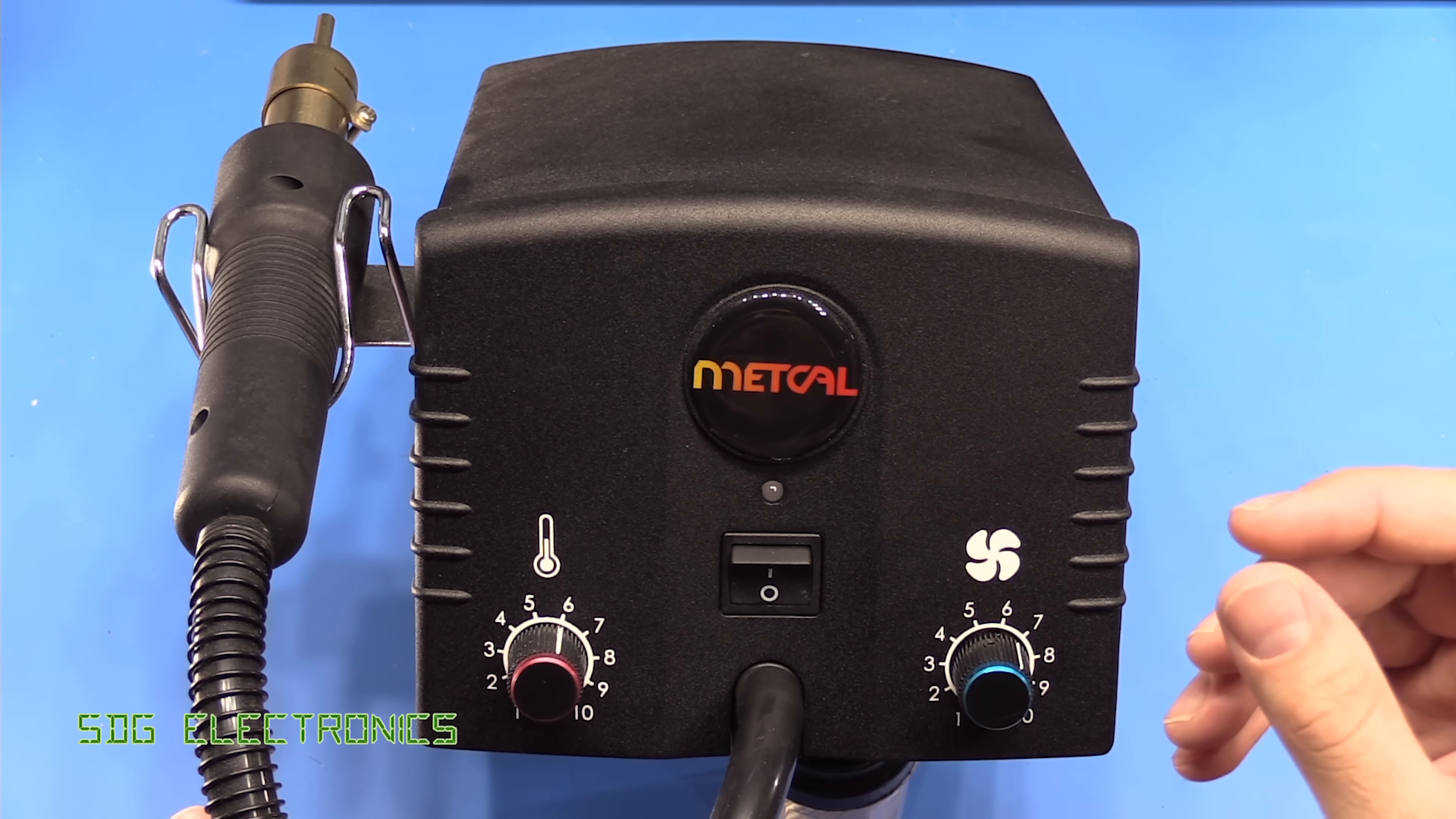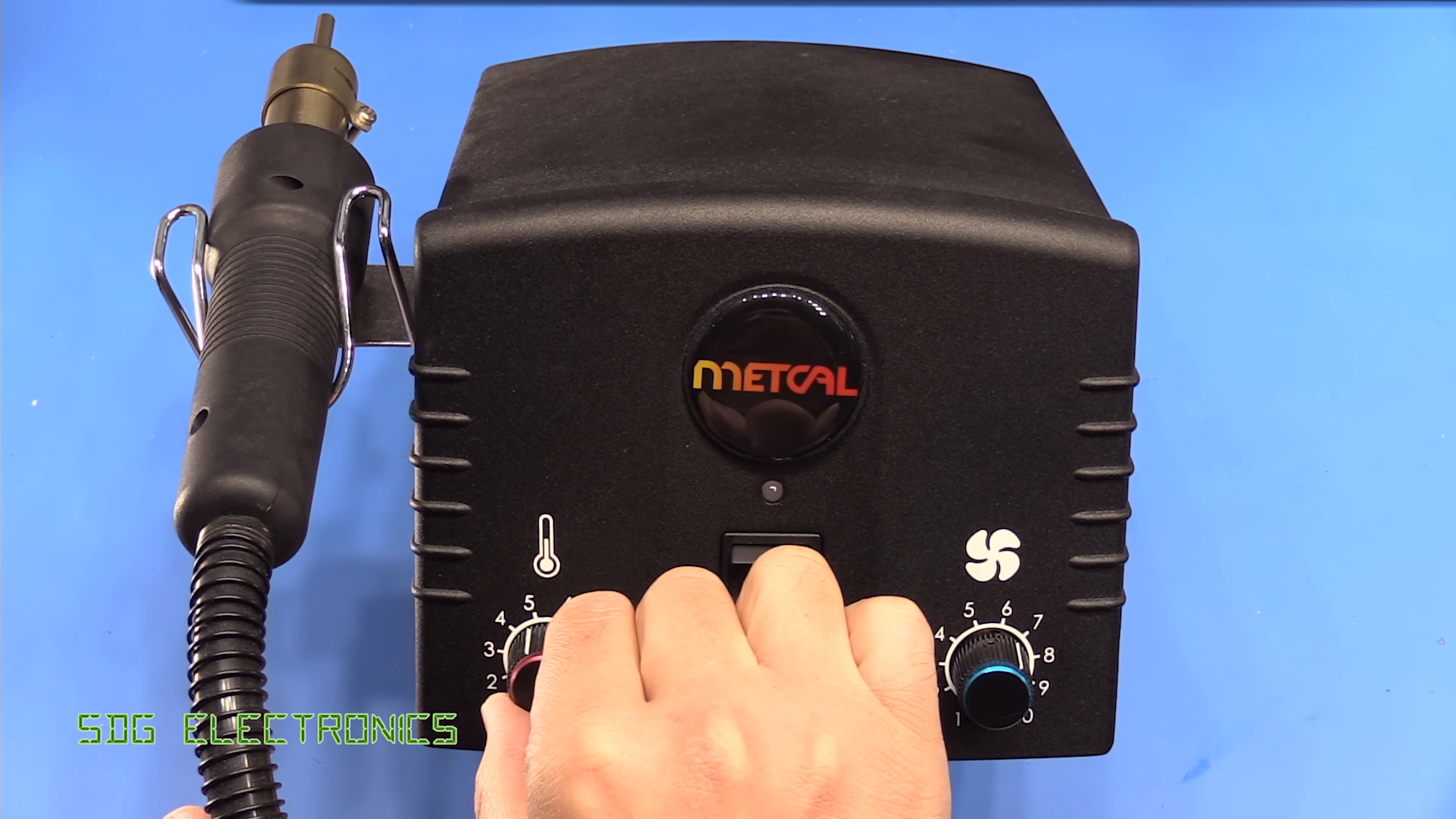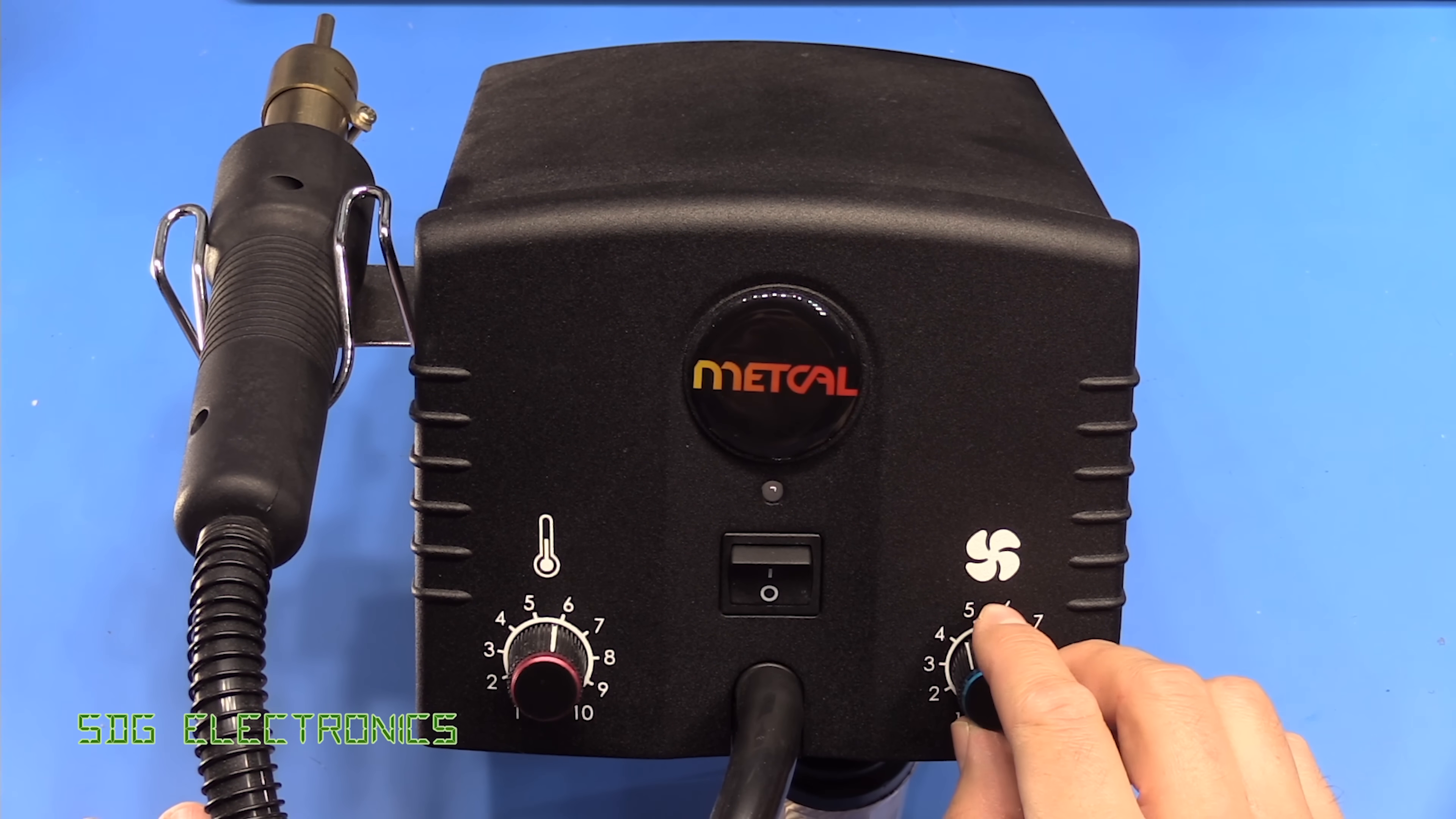If it's getting too hot you can either lift the handle away from the PCB slightly or just adjust it down a little bit, and the potentiometers on the front mean that you've got very quick adjustment of these features.